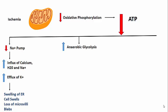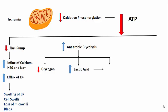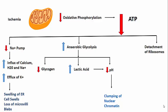The second important consequence of decreased ATP is increased anaerobic glycolysis — since ATP is depleted, the cell uses glycogen. Anaerobic glycolysis results in three things: depletion of glycogen; increased lactic acid production, which leads to decreased pH and causes clumping of nuclear chromatin; and structural disruption of the protein synthetic apparatus — specifically detachment of ribosomes from the rough endoplasmic reticulum — resulting in decreased protein synthesis. With no lipoprotein production, there will be increased lipid deposition.